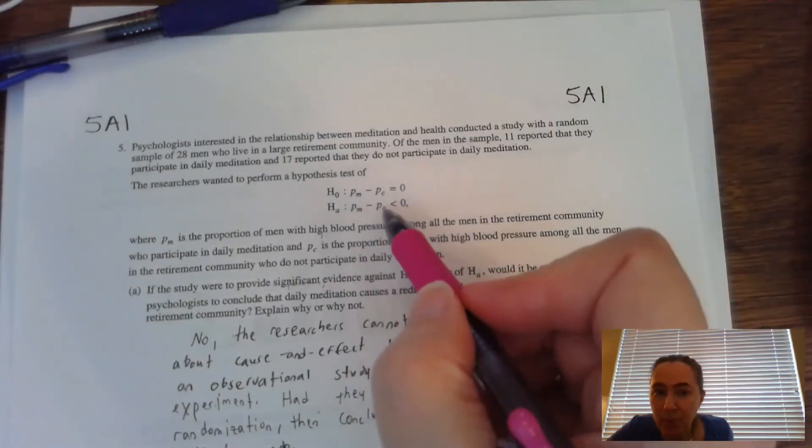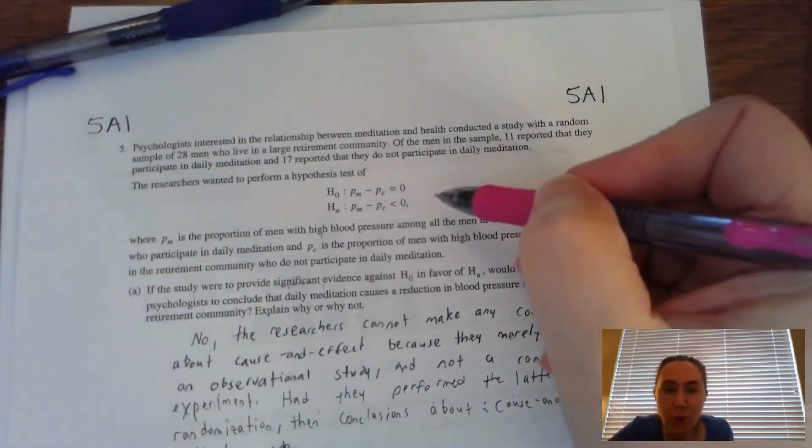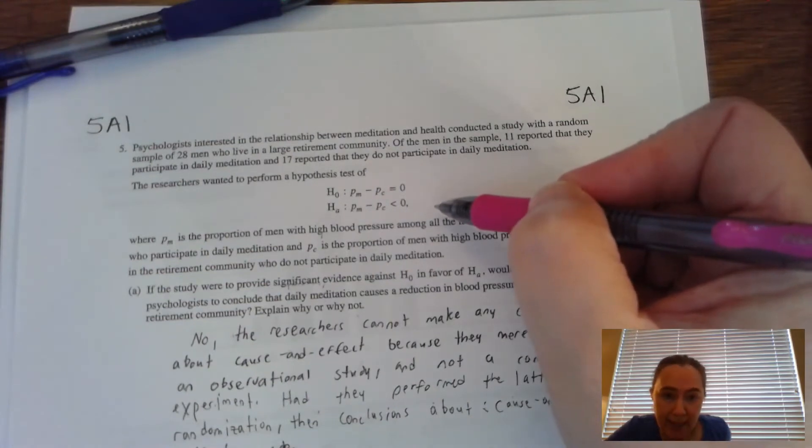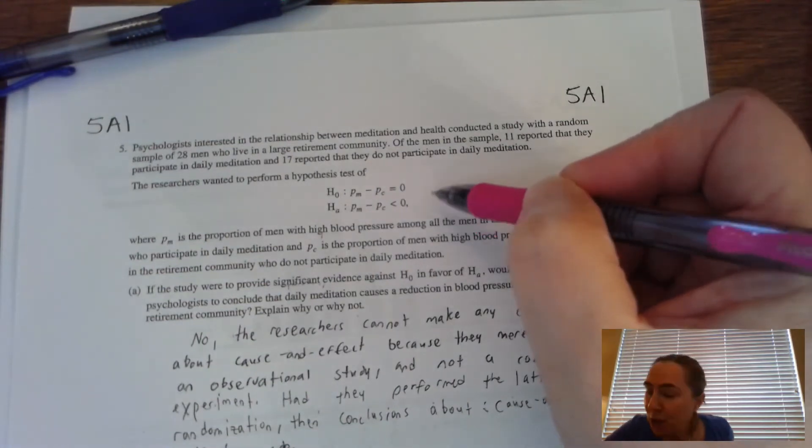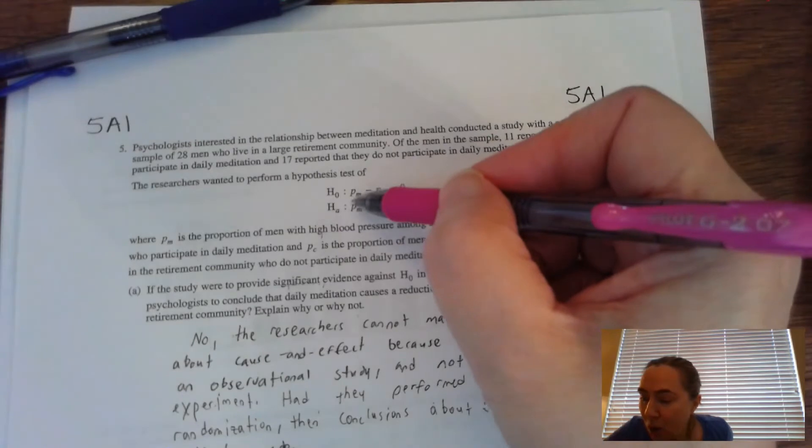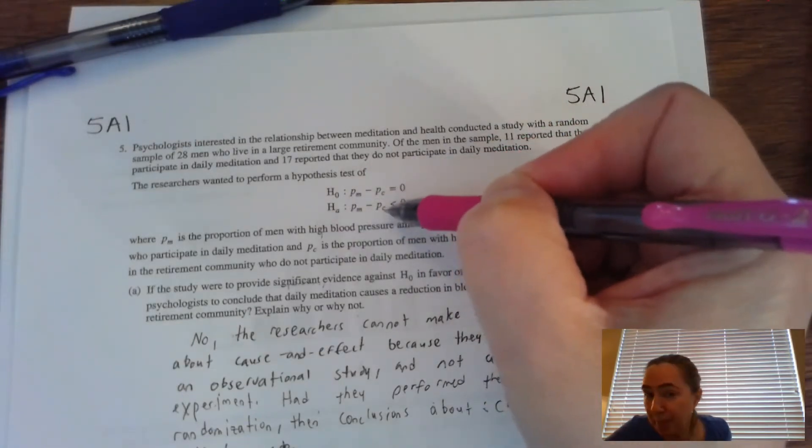And just from looking at the symbols, you see that it is going to be a two proportion Z test. And there are two groups, men that are in meditating, that meditate, and then there's a control group, men that don't meditate.